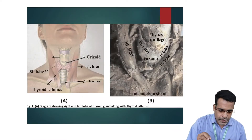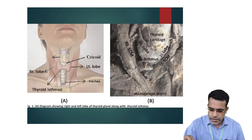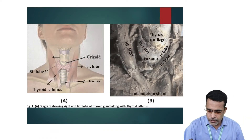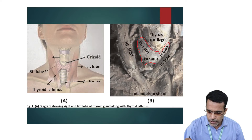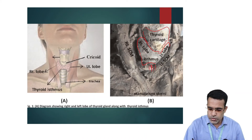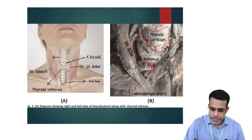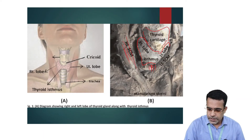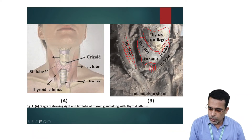This diagrammatic representation shows how exactly in the cadaveric specimen the thyroid lobes and isthmus are located in relation to the thyroid cartilage (Adam's apple) and the trachea below, with the sternocleidomastoid muscle on the side. This is how the thyroid gland is positioned in front of the neck.